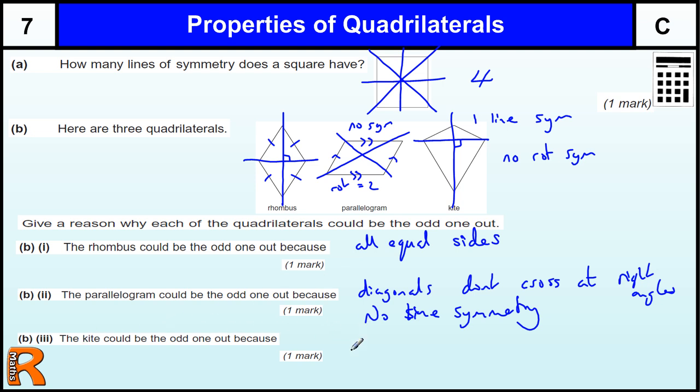The kite, odd one out, one line of symmetry. Any one of these would do. No rotational symmetry. And opposite sides are not equal, which these two were.